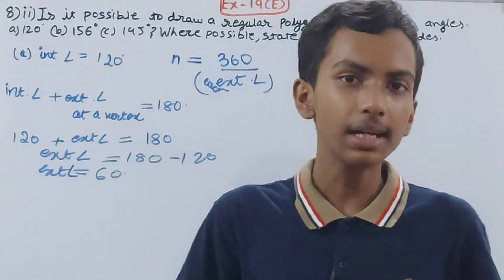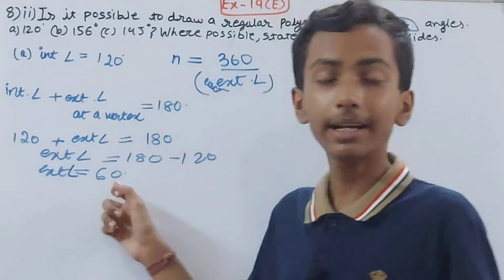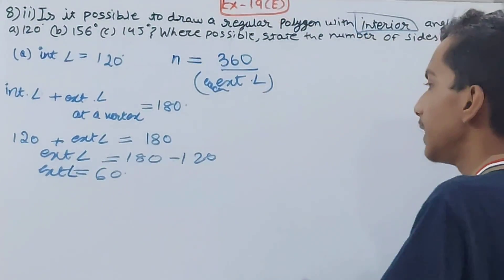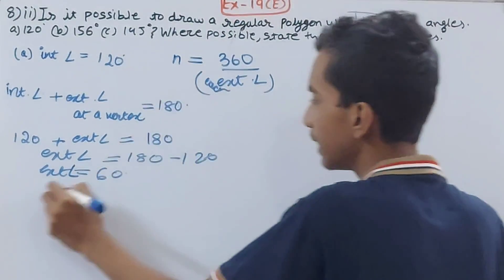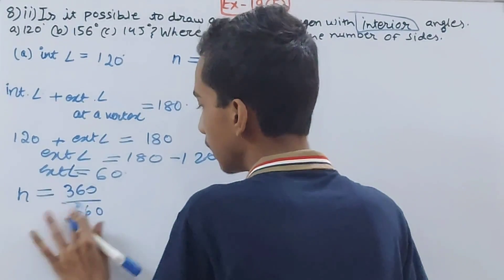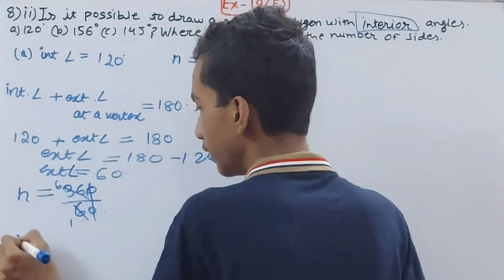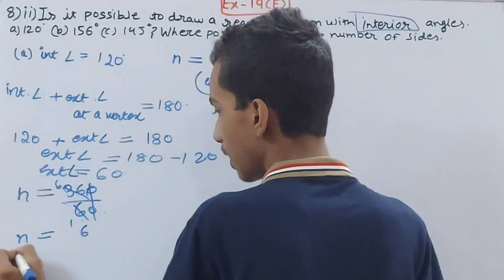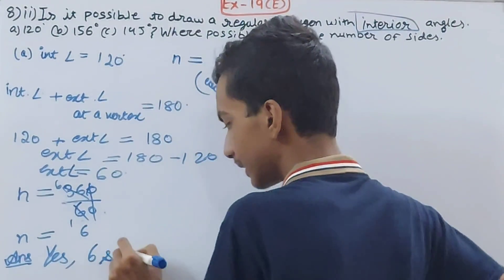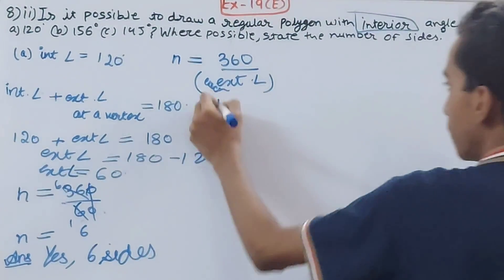In a regular polygon all exterior angles have the same measure, so if one exterior angle is 60 degrees, all are 60 degrees. Now applying the formula: n equals 360 divided by 60. Cancelling the zeros gives n equal to 6. So the answer is yes, you can make a polygon, and it will have 6 sides.